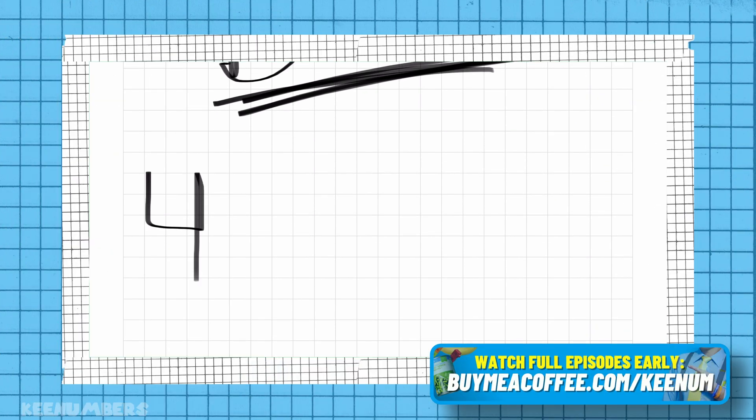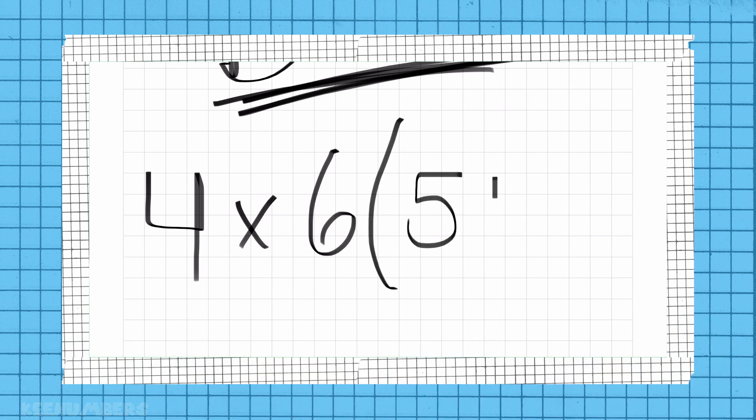In the bonus section here, we have four by six parentheses five. How could we do this?